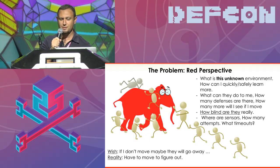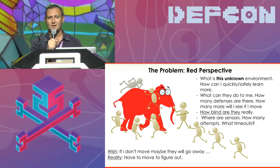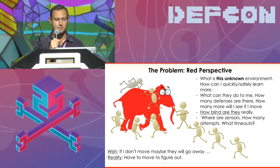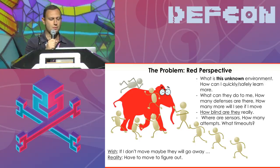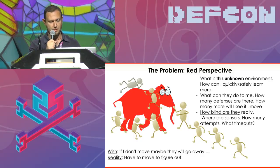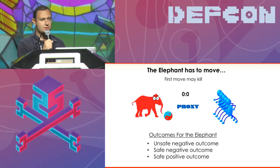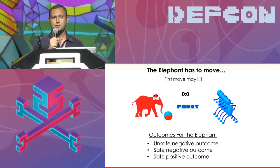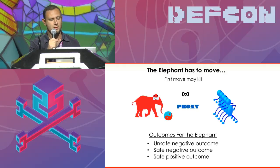The red team elephant has to know what that environment really is — what can they do to me, how many defenses, where, and how? The wish for the red elephant is to stay put and understand what's going on, but unfortunately the reality is that the red team has to move first. It's a game of first move, but unfortunately first move may kill. If you're in quiet or supervised environments, moving content through a proxy is going to be very challenging sometimes.